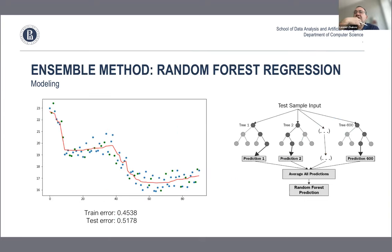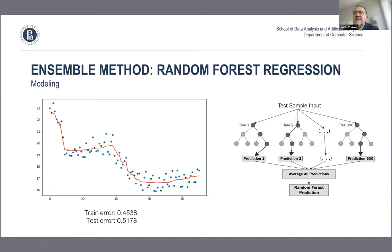One more example is ensemble methods — not a single tree but multiple trees. The way an ensemble works is that each tree makes its own prediction and then the ensemble averages them out. Again we see train error less than test error.